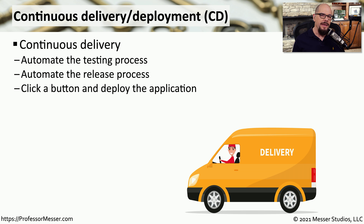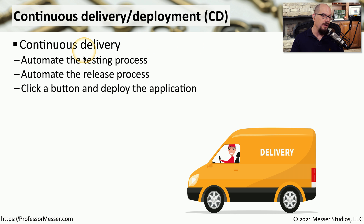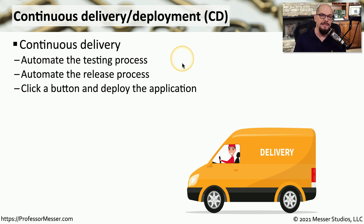If we can automate the checks during the development process, then we should also be able to automate the checks during the testing process. This is called continuous delivery, where we're going to automate the testing and the release of this particular application. Our automated security checks will occur during the testing process, and it will wait for us to click a button to deploy this application into production.